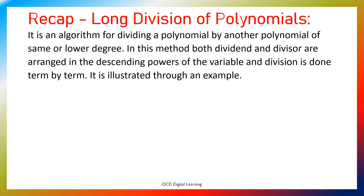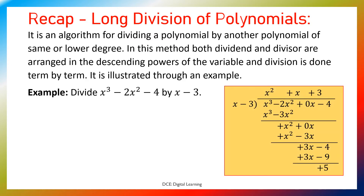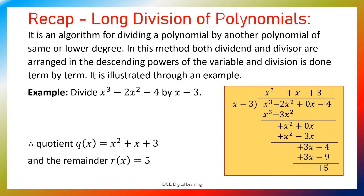It is illustrated through an example. Example: Divide x cubed minus 2x squared minus 4 by x minus 3. We arrange the dividend as x cubed minus 2x squared plus 0x minus 4 and divisor x minus 3, and the division is shown here. After division, the quotient is x squared plus x plus 3 and the remainder r(x) equals 5. The divisor is a linear polynomial, the remainder is a constant, and the degree of the remainder is less than the degree of the divisor.